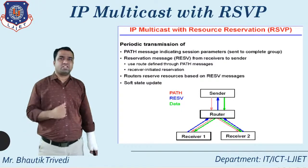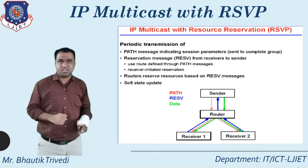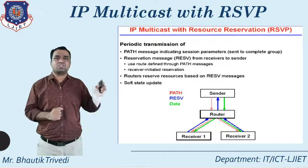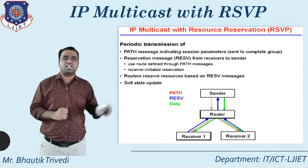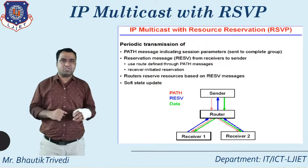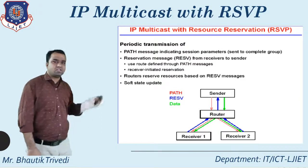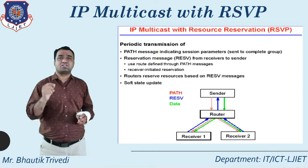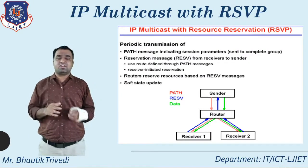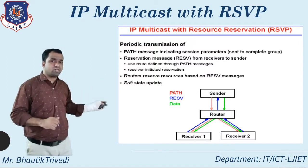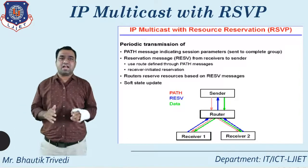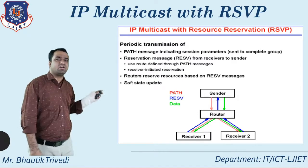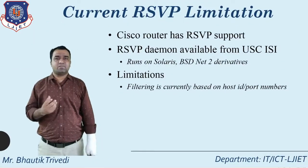For IP multicast with RSVP, one sender communicates with a group of receivers. Using PATH messages, RESV messages, and policy data, multicasting is applied in RSVP. In the diagram, the sender communicates through a router to multiple receivers. The red indication is the PATH message, the blue indication is the RESV message, and the green indication is the policy data.